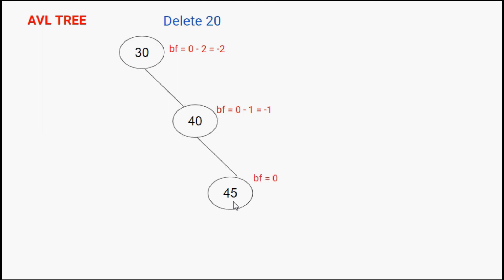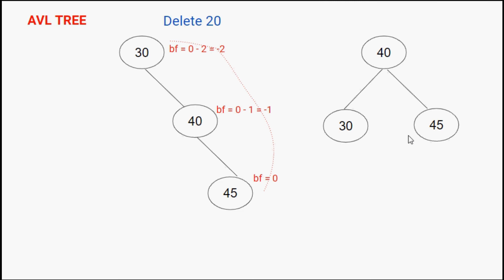The tree is now imbalanced. Since we have only three nodes remaining, we consider all three. We pull node 30 downward and push node 40 upward — this is a left rotation, because we are pulling 30 towards the left. After the rotation: 40 becomes the root, 30 becomes the left child of 40, and 45 remains the right child of 40. Recalculating balance factors, all nodes have balance factor 0, so this is now a valid AVL tree.